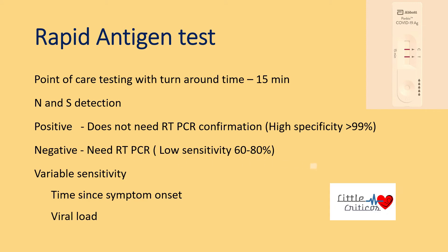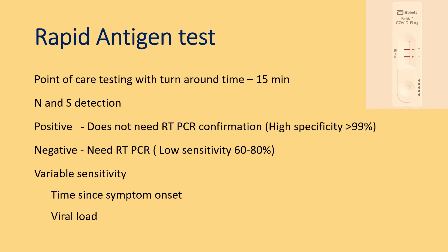Rapid antigen tests are point-of-care tests that target N and S antigens, with a turnaround time of 15 minutes. If positive, RT-PCR confirmation is not needed given its high specificity of about 99 percent. However, if negative and clinical suspicion is strong, it should be followed with RT-PCR. The variable sensitivity of rapid antigen tests is due to variable viral load and timing relative to symptom onset.